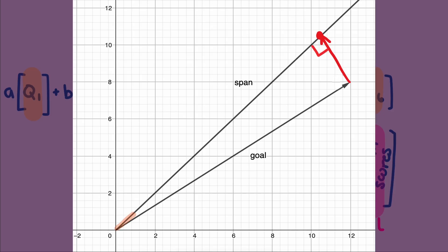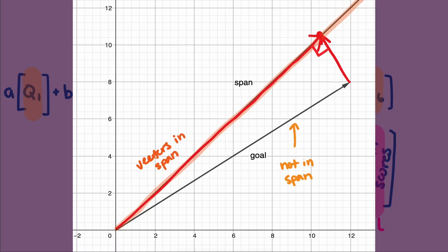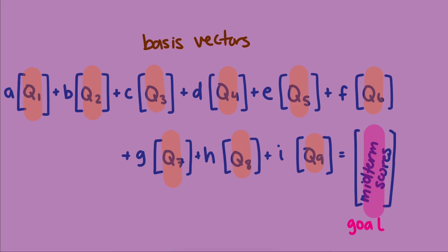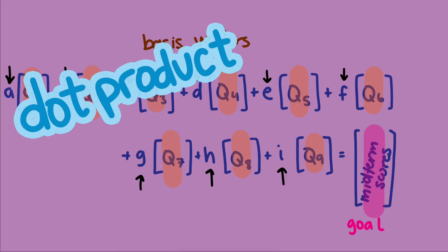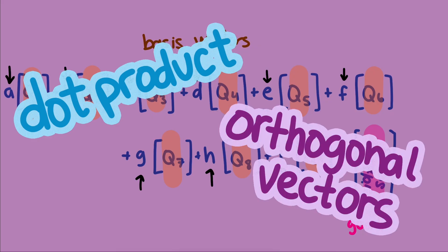Here is the goal vector, which does not live in the span of the basis vectors. The best approximation to the goal vector, using only vectors within the plane, is the shadow it casts onto the plane, also known as its projection. If we can find an algebraic way of representing these two vectors — the shadow and the vector orthogonal to the plane pointing to the head of the goal vector — the solution to our problem is the coefficients of these basis vectors that create this projected vector.